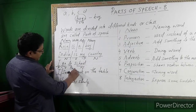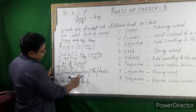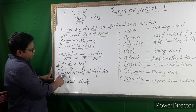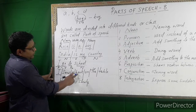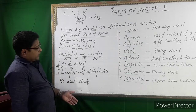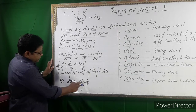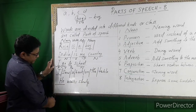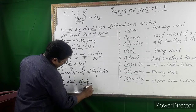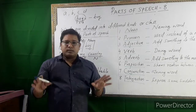'I saw a book on the table.' 'I' is a pronoun, 'saw' is a verb, 'a' is an adjective, 'book' is a noun, 'on' is a preposition, 'the' is an adjective, 'table' is a noun. Then, 'he works slowly.' 'He' is a pronoun, 'works' is a verb, and 'slowly' is an adverb. In this way a sentence is divided.